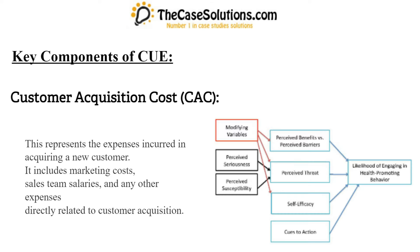Key components of CUE. Customer acquisition cost, CAC: this represents the expenses incurred in acquiring a new customer. It includes marketing costs, sales team salaries, and any other expenses directly related to customer acquisition.